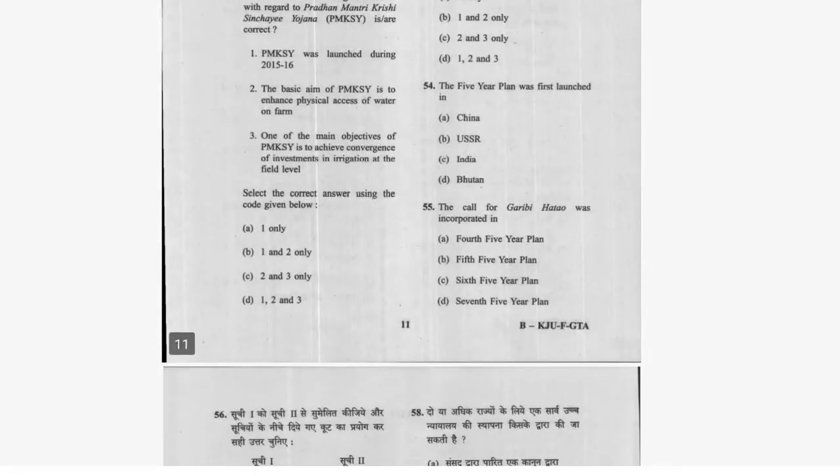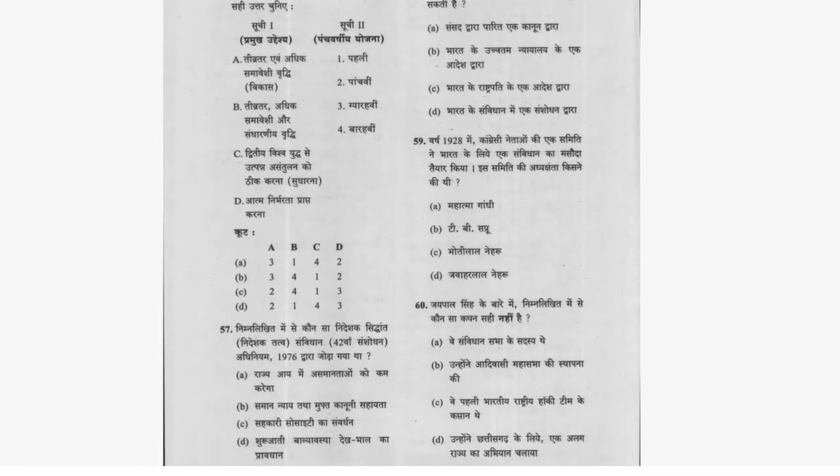Question 54: The Five Year Plan model was taken from USSR, which is now Russia. Question 55: The call for 'Garibi Hatao' was incorporated during Indira Gandhi's time in the Fifth Five Year Plan. Option B is correct.